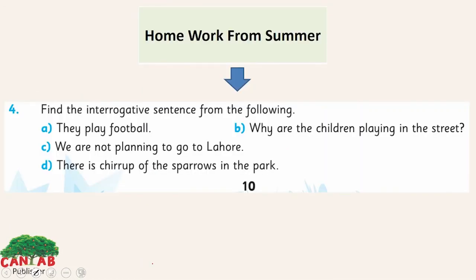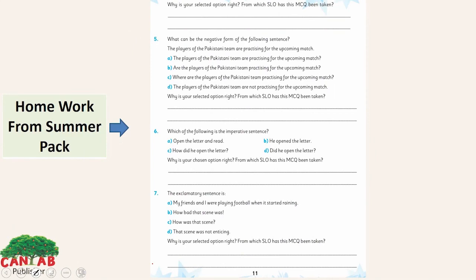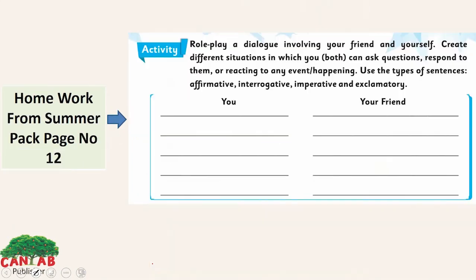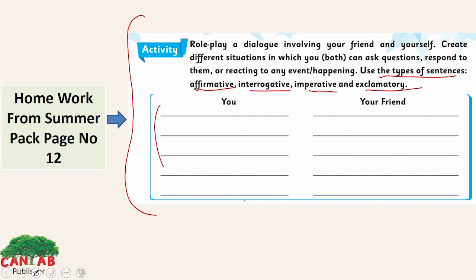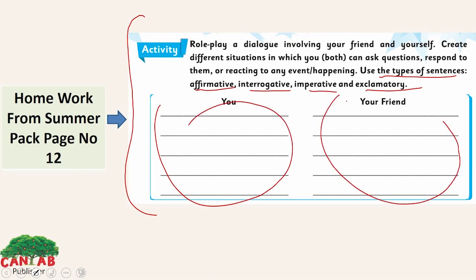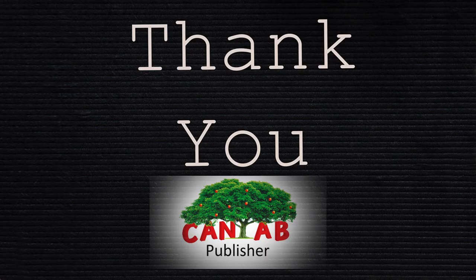I want you to do the remaining eight sentences by yourself — this is your homework from the summer pack. Also do page number 11 and page number 12 from your summer pack. Additionally, there is an activity: role play a dialogue with your friend. Create different situations where you can ask questions, respond to them, or react to any event. Use the types of sentences — affirmative, interrogative, imperative, and exclamatory. I hope you will do your homework. Thank you.